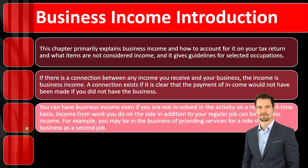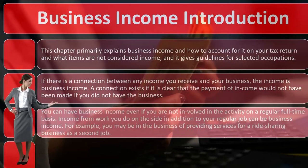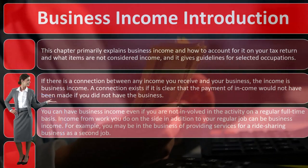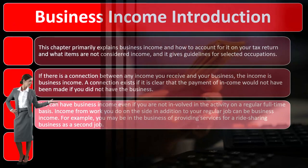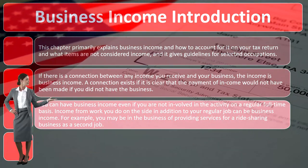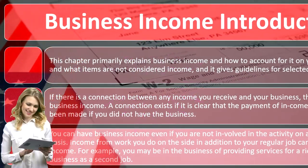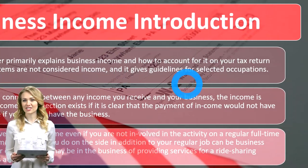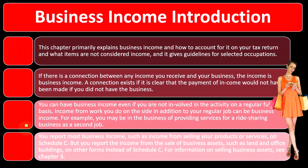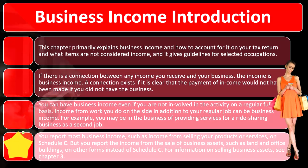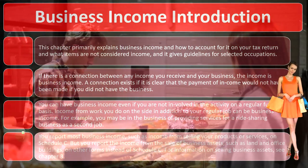You can have business income even if you are not involved in the activity on a regular full-time basis. So you might be saying, hey, it's only gig work — I got a little YouTube income, a little gig work platform income. It's not a big deal, but it is business income even if you're not full-time. You still need to report the income. Income from work you do on the side in addition to your regular job can be business income — for example, providing services for a ride-sharing business as a second job. You report most business income, such as income from selling your products or services, on Schedule C.